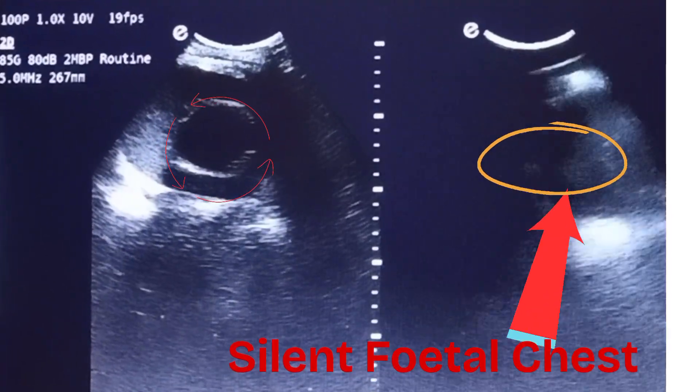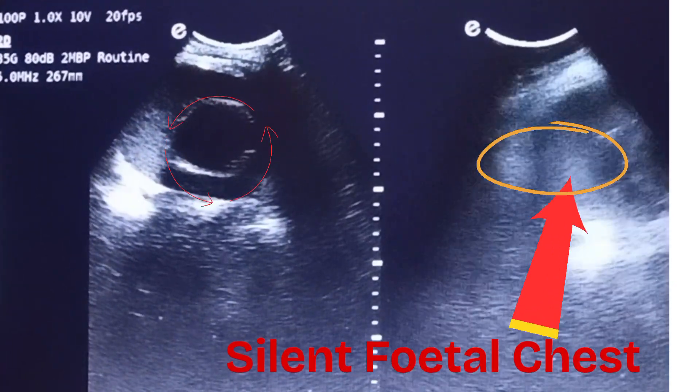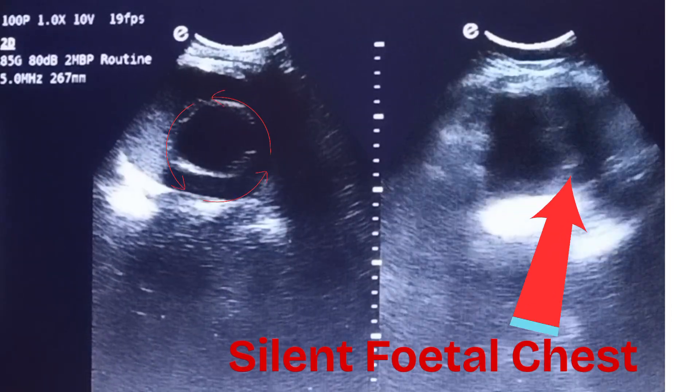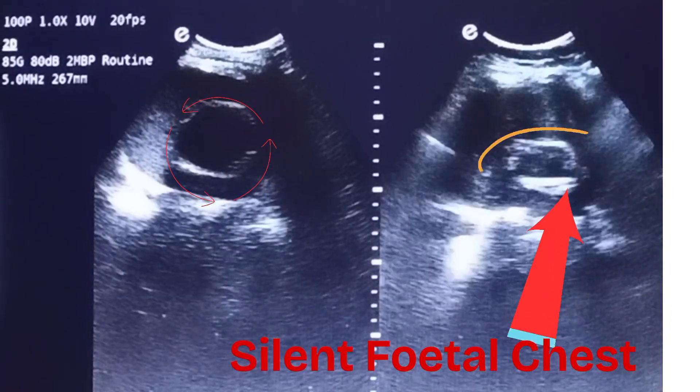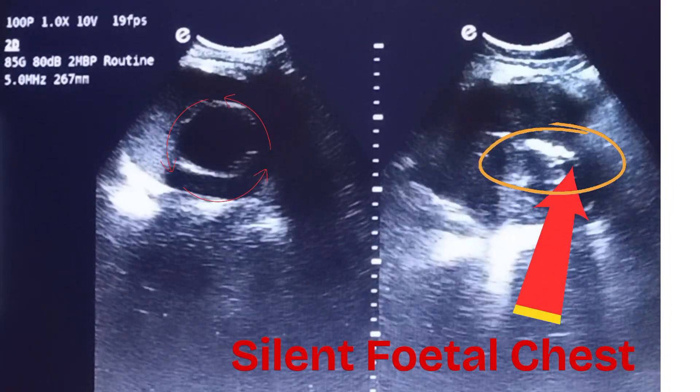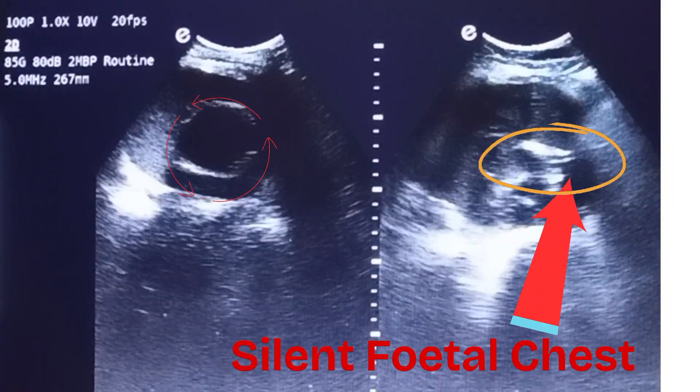During a normal alive fetus, movements of the ribs can be seen during breathing. But here the fetus is not alive, so we find a silent chest without any chest movements.